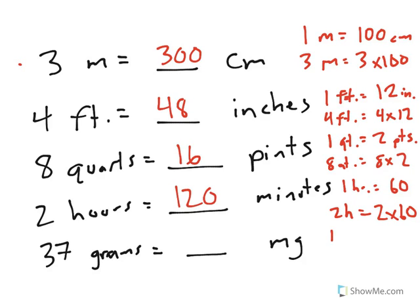And last, grams to milligrams. In 1 gram, there are 1,000 milligrams. So that would mean that 37 grams is equal to 37 times 1,000 or 37,000 milligrams.